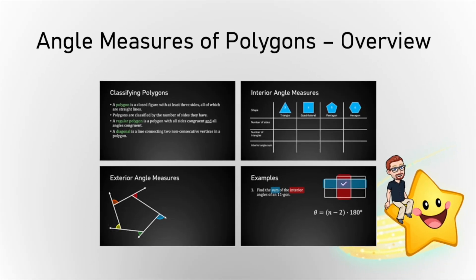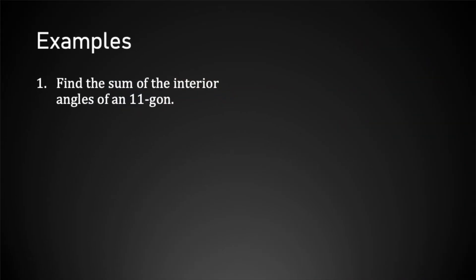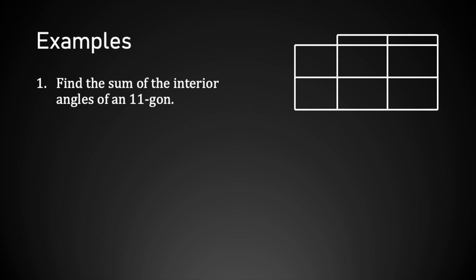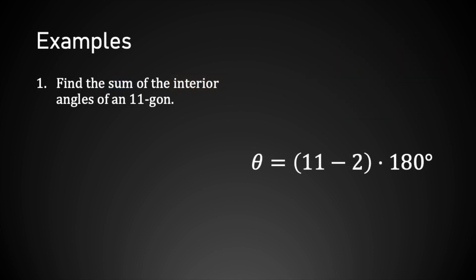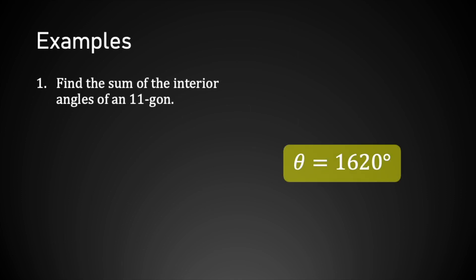Now let's see some examples. Example 1: find the sum of the interior angles of an 11-gon. This asks for the sum and interior, so we'll use the formula θ = (n − 2) × 180 degrees. n is 11, so 11 minus 2 is 9, and 9 times 180 degrees is 1,620 degrees.